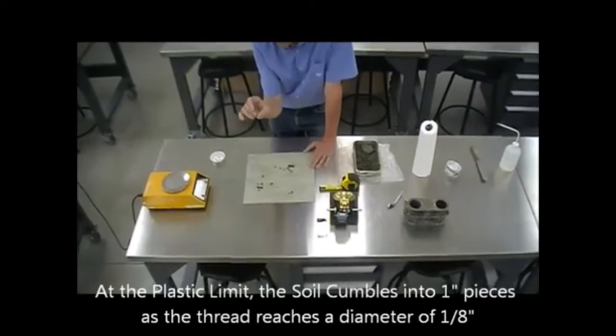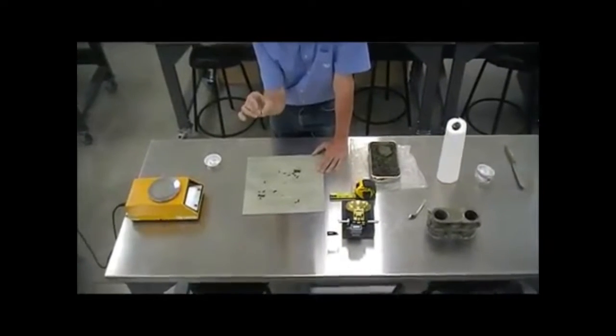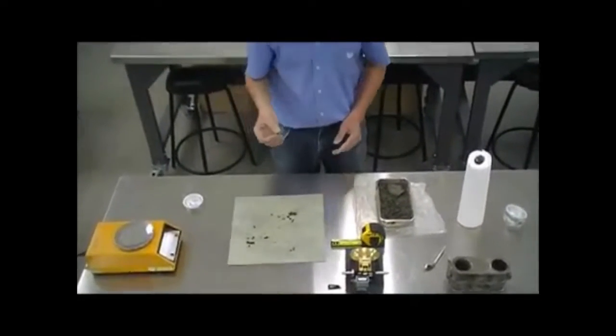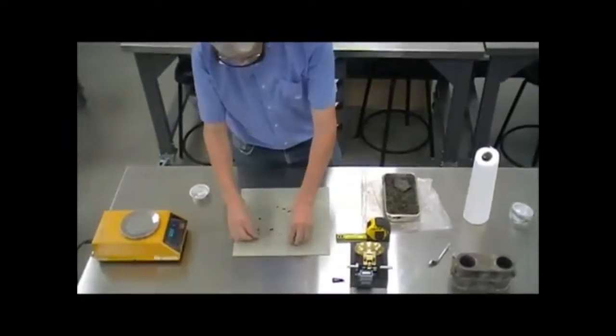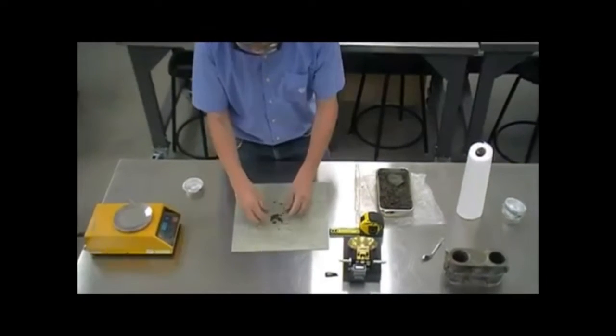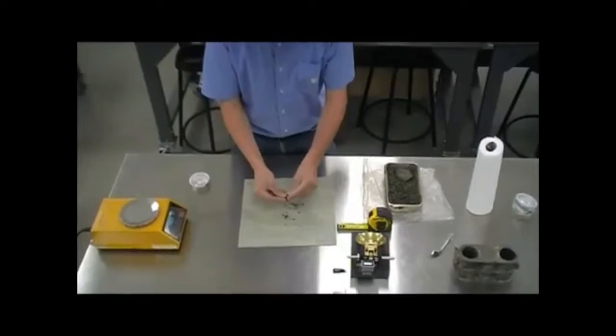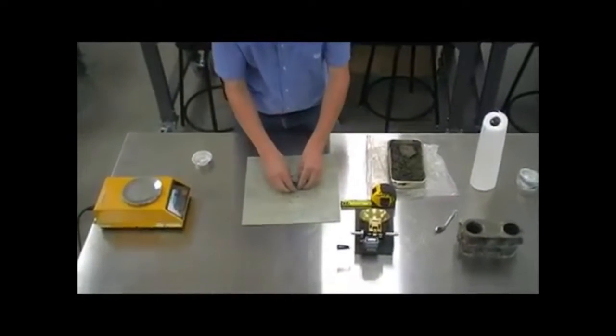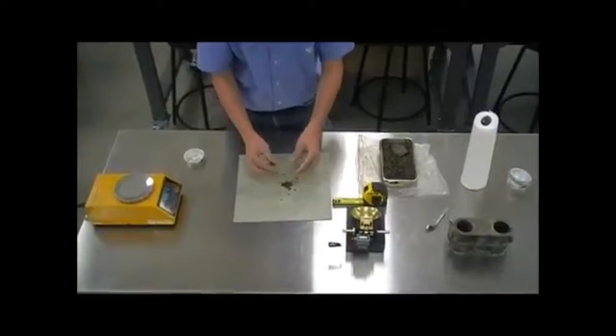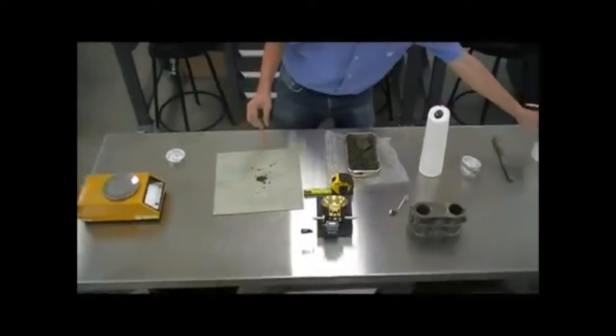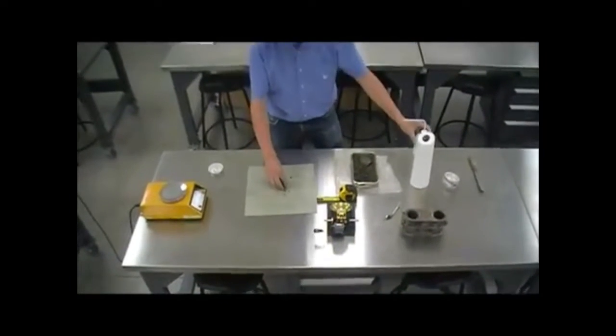So if the material is too wet, we manipulate it to dry it a little more or mix it with drier material. If the material is too dry, we will be mixing it with water to bring it to the right consistency.